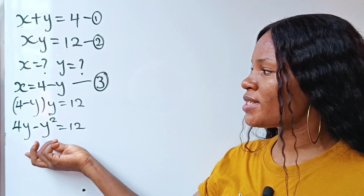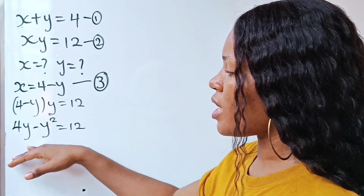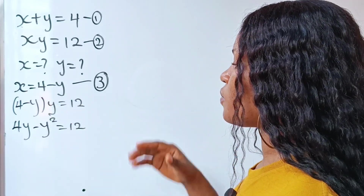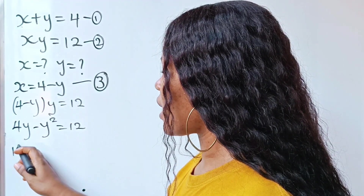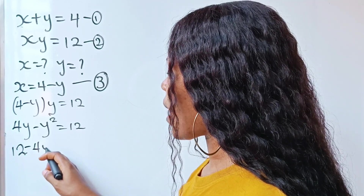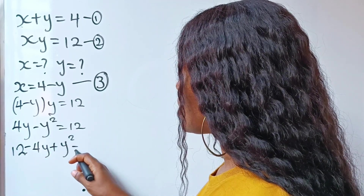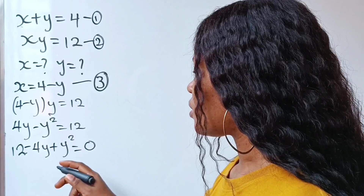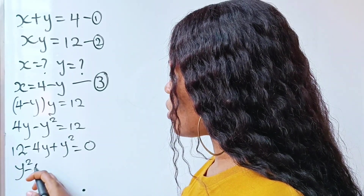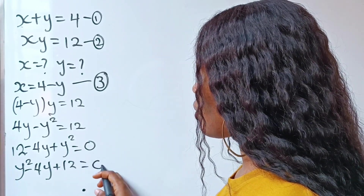Notice that we have formed a quadratic equation, but it's not well arranged. So let's transfer everything to one side. If we do that, 12 becomes minus 4y, and minus y squared becomes plus y squared, equal to 0. Arranging properly: y squared minus 4y plus 12 is equal to 0.